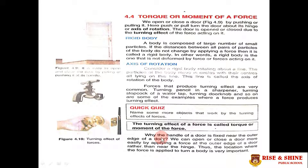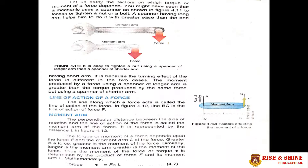Torque depends on the force and the moment arm, which we will discuss later. We can open or close a door more easily by applying a force at the outer edge of the door rather than near the hinge. Applying force at the outer edge, away from the axis of rotation, produces more torque because the moment arm of the force is greater there. Thus, the location where the force is applied to turn a body is very important.